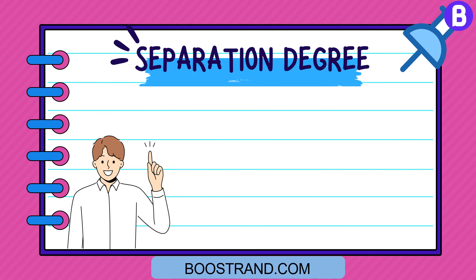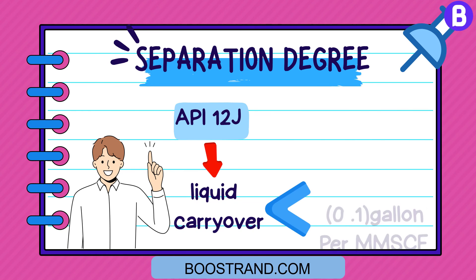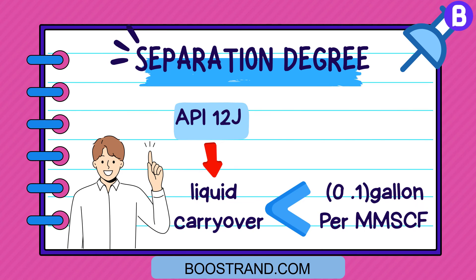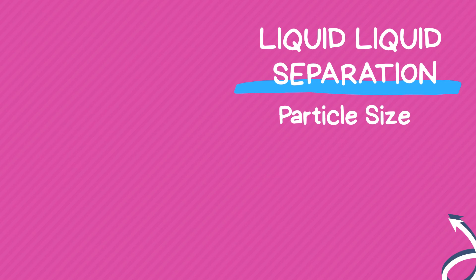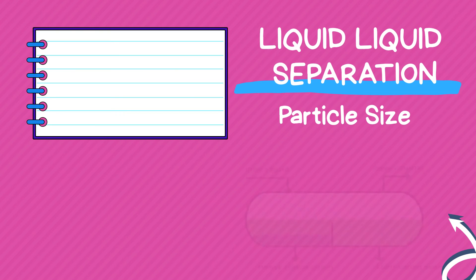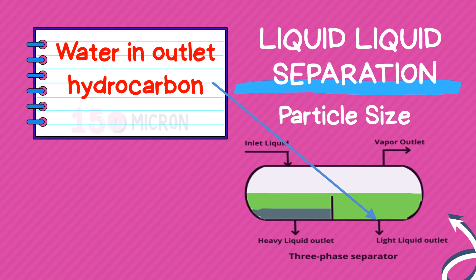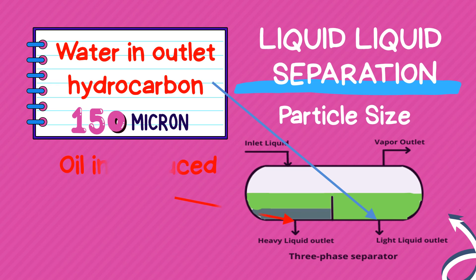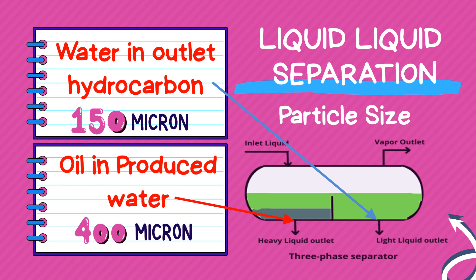The separation degree is important to define before starting to size the vessel. In general, API 12J states that liquid carryover is normally less than 0.1 gallon per million standard cubic feet. For liquid-liquid separation, it is usually expressed in the form of particle size. For example, we may define that the maximum droplet size of water in oil is 150 micron and the maximum droplet size of oil in water is 400 micron. The criteria depend on the project and the standards that shall be used.